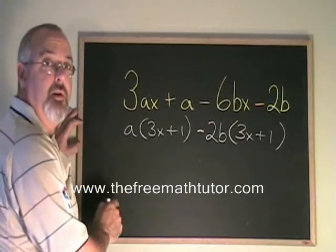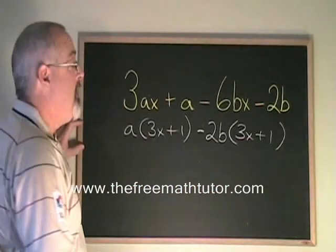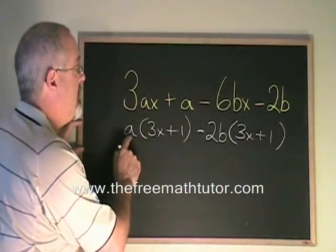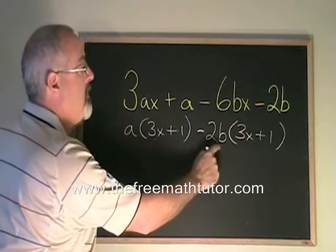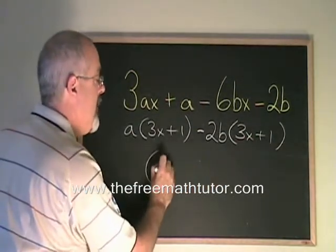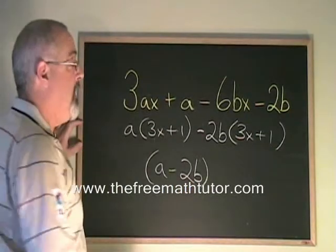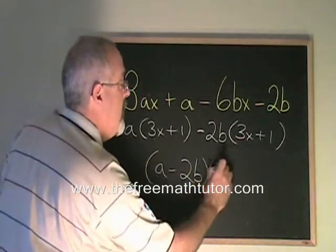It is an important step in grouping that what shows up inside the bracket has to be the same. Because that allows us to say, since both a and minus 2b are being multiplied by the same thing, we can write a minus 2b into a binomial, and that binomial will be multiplied by 3x plus 1.